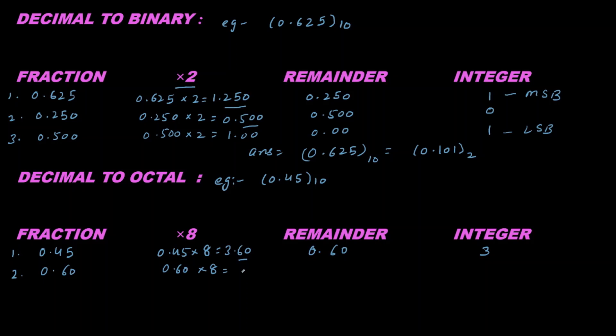So 0.80 is remainder and 4 is integer. Now write 0.80 here. If I multiply 0.80 by 8, I get 6.40, so 0.40 is the remainder and 6 is integer. We are doing this till three decimal places; you can continue with more if you want. This is MSB and this is LSB.